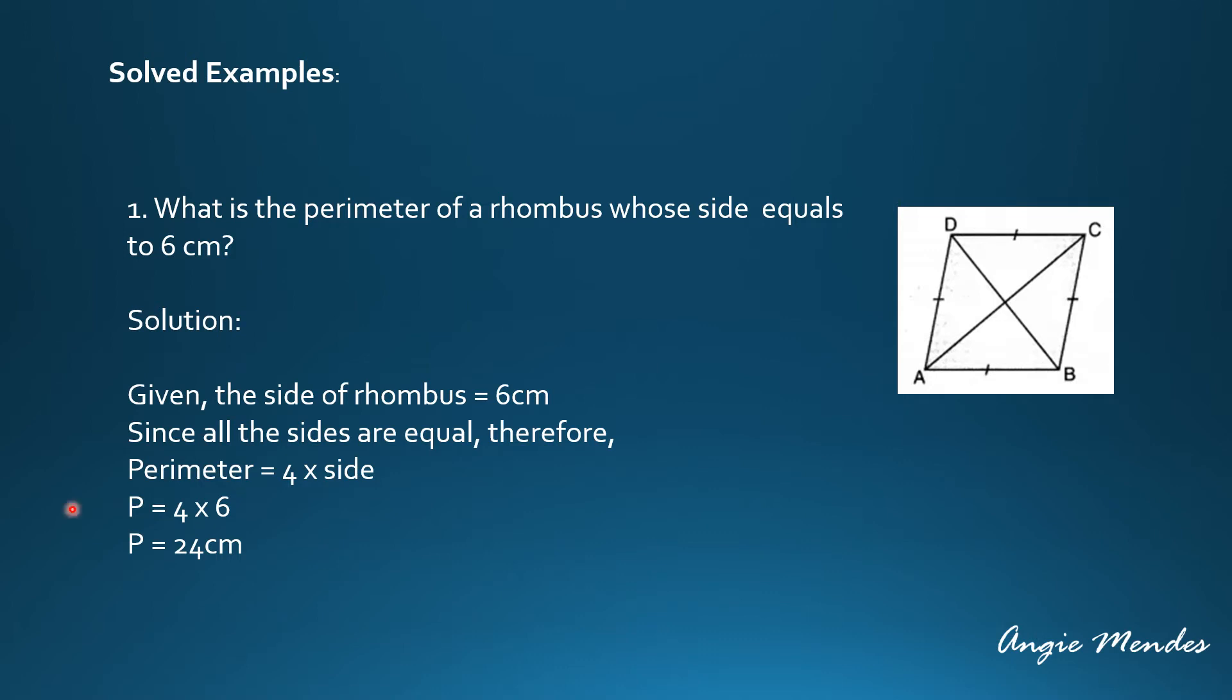Let's begin with the first example. What is the perimeter of a rhombus whose side equals to 6 cm? We know that a rhombus is a quadrilateral with sides of equal length. Given here is that the side of the rhombus is 6 cm. Since all the sides are equal, we can find the perimeter where the perimeter is 4 times the side. We can substitute the value of the side and we will get the perimeter equals to 24 cm.